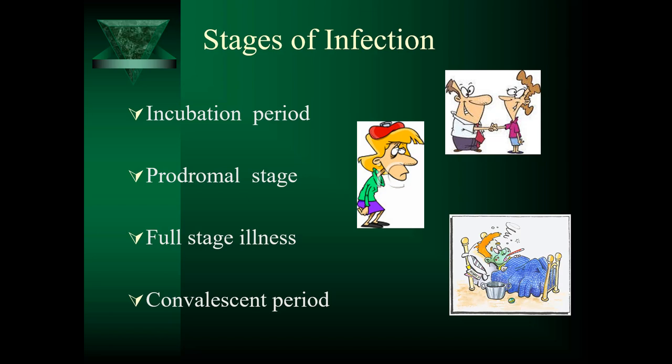Then there's the full-stage illness, where the presence of specific signs and symptoms indicates the patient is in this stage. Symptoms limited to one body area are called localized symptoms, while symptoms manifested throughout the entire body, such as fever, are referred to as systemic symptoms. This is the stage where the patient actually feels very sick. The convalescent period, also known as recovery, has a length that often depends on the severity of the infection and the patient's overall general condition.